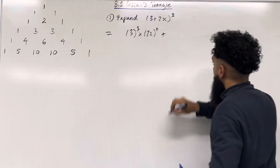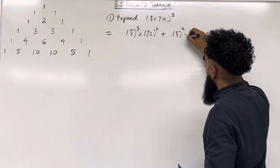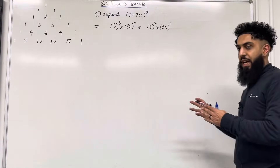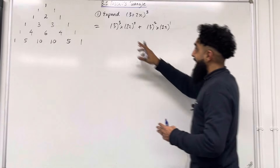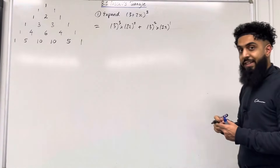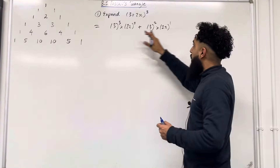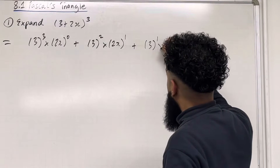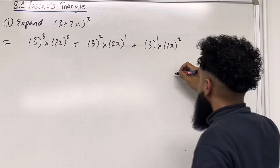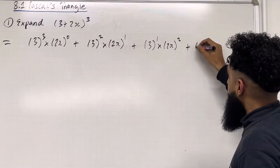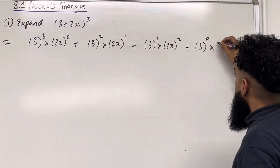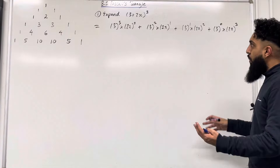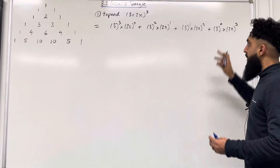Plus: we take 3 raised to the power of 2, multiplied by 2x raised to the power of 1. Each time we are decreasing the power of 3 by 1 but increasing the power of 2x by 1. So the next term would be 3 to the power of 1 multiplied by 2x to the power of 2, and the final term would be 3 to the power of 0 multiplied by 2x to the power of 3. So over here we have 4 different terms.